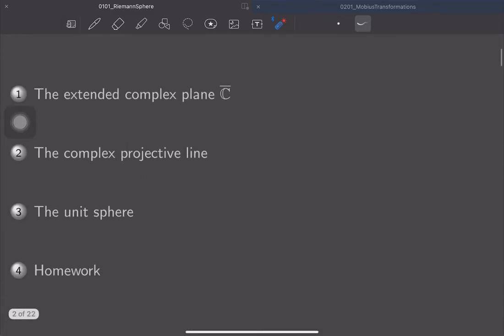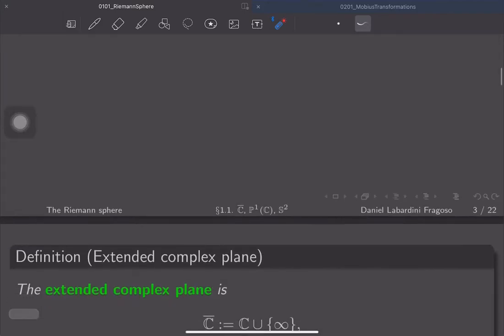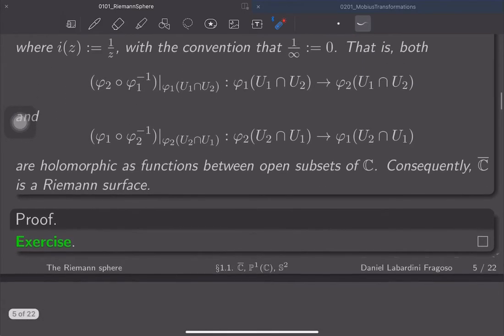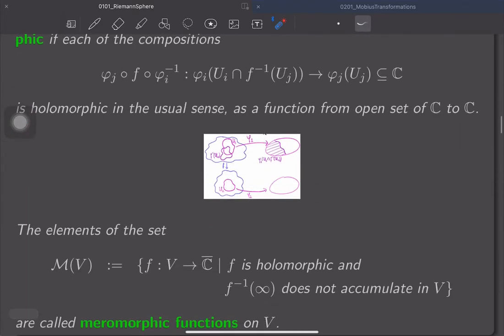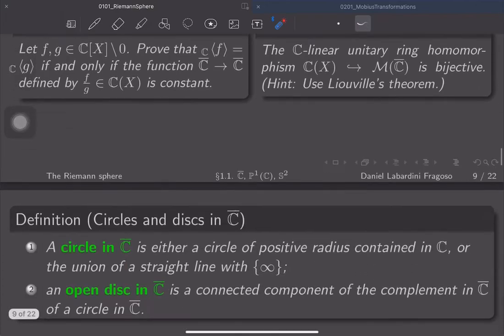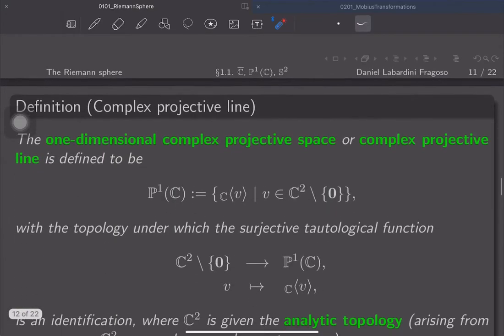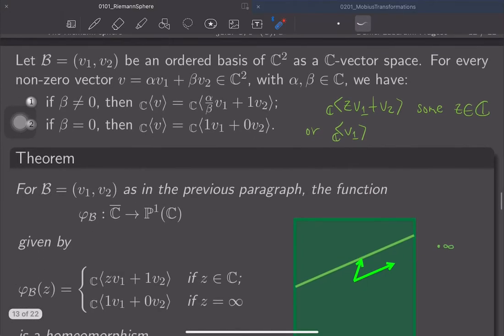So I want to say kind of a few more words about the complex projective line. At some point we saw that if you give me an ordered basis of C², then every one-dimensional vector subspace of C² can be written with respect to this basis.